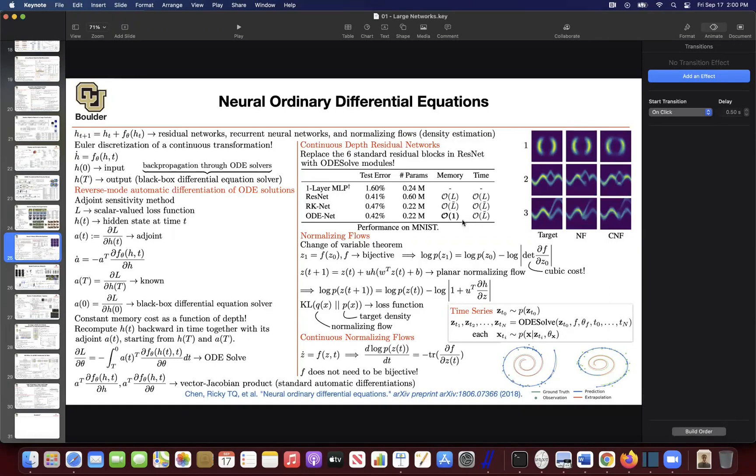This idea of continuous depth is going to help you reduce the cost from cubic to linear. At the same time, it's giving you constant memory because whenever you're doing back propagation, you need to store the computations that you make in your forward pass. When you want to go backward, you're going to need them. That's why ResNet has order of L in terms of memory, where L is the depth. Back propagation is a combination of the chain rule from a mathematical perspective and from computer science perspective, it's this idea of memoization.